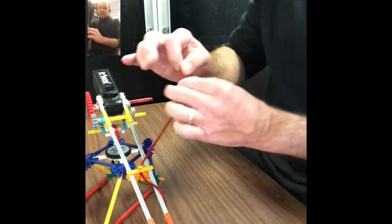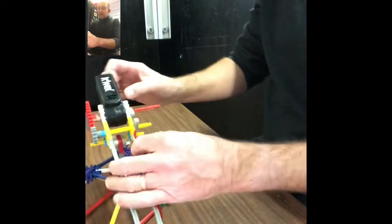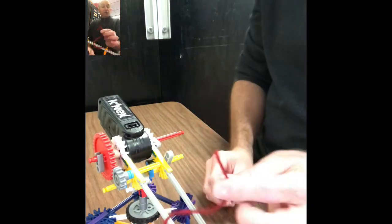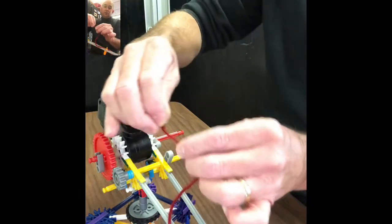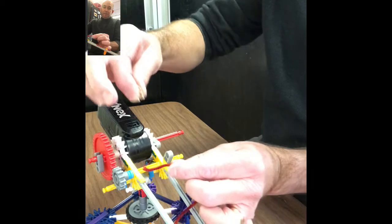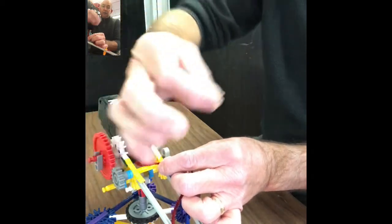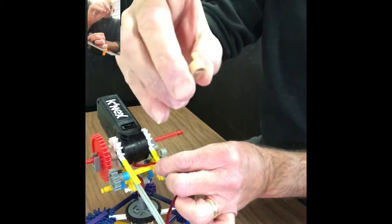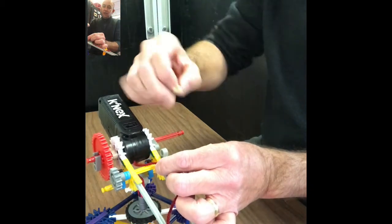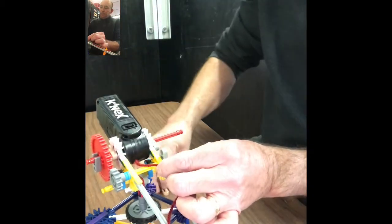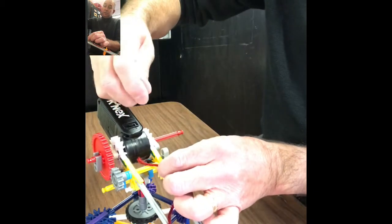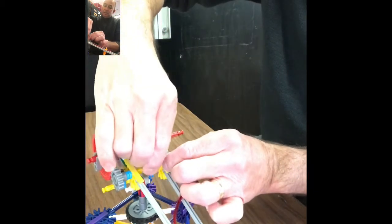Now, this end, this loose end will be attached to this yellow axle right there. And you don't tie anything. What you do is you simply snap the string, the yarn, underneath a tan lock. And you want to make sure that your tan lock faces to the center. Be very careful when you do this. And you simply just snap it in there.